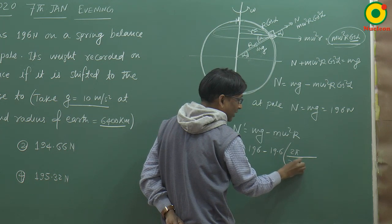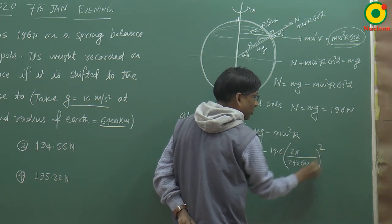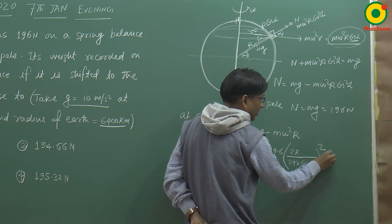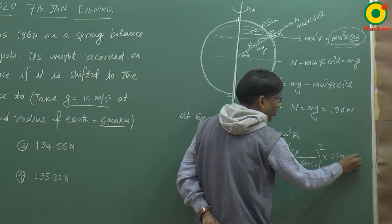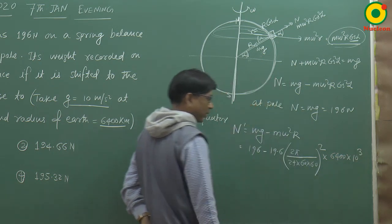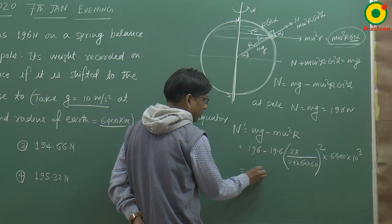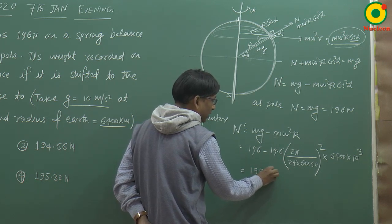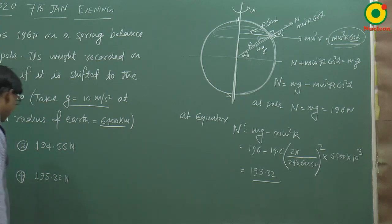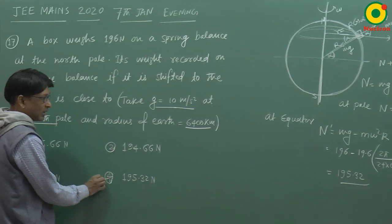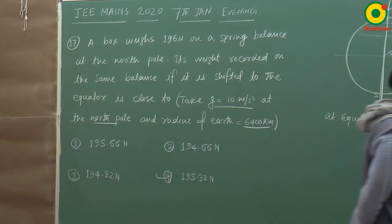T = 24 × 60 × 60 seconds। ω² को square करके radius = 6400 km = 6400 × 10³ m रखेंगे और simplify करेंगे तो approximately 195.32 N आएगा। Options check करने पर fourth option match कर रहा है — यही correct answer है।